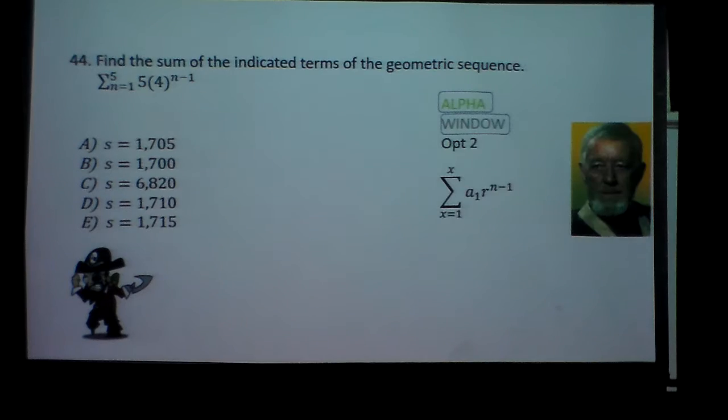Well, this would obviously be the easiest way would be to do the alpha windows option 2 of A sub 1, meaning the first term. Alright, R to the n minus 1.